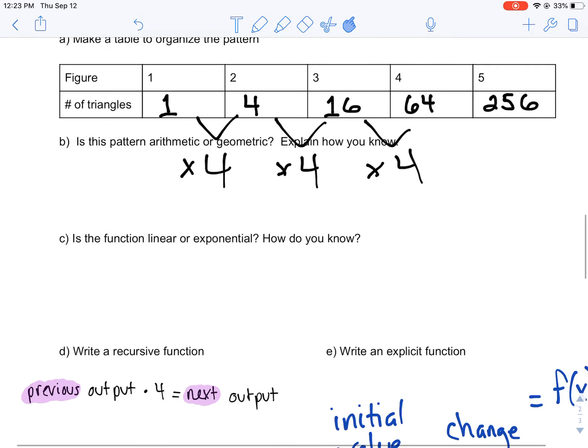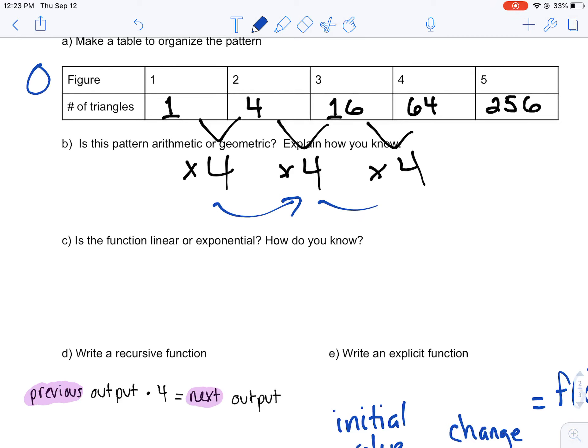But I know going forward here I'm multiplying by 4. So what I would do to go backwards instead of multiplying, I'm going to divide by 4. So I'm going to take 1, I'm going to divide by 4 going backwards.